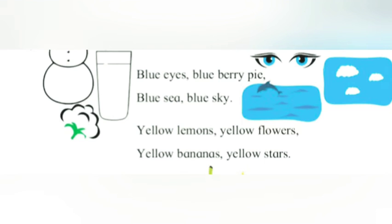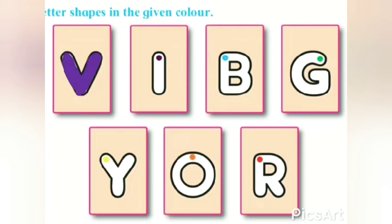Blue colors. Now color the letters: V, I, B, G, Y, O, R with the given colors in the letters.